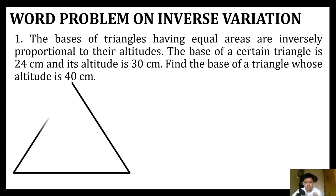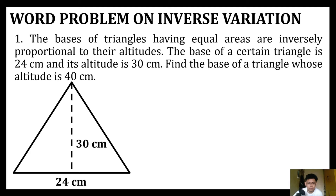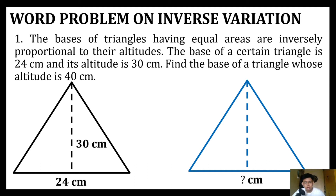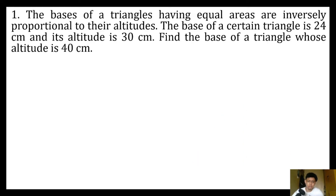Find the base of a triangle whose altitude is 40 centimeters. In this word problem we have two different triangles with the same area. The first triangle has a base of 24 centimeters and altitude of 30 centimeters. The second triangle — we're looking for the base with the altitude of 40 centimeters. Based on the problem, they are inversely proportional to their altitudes.